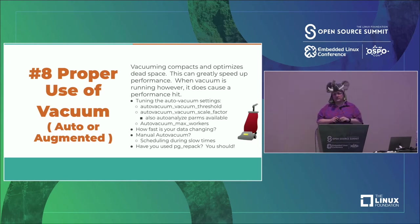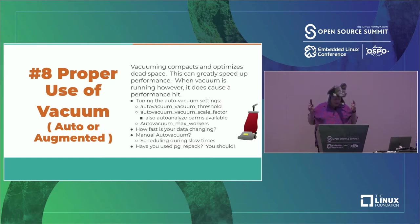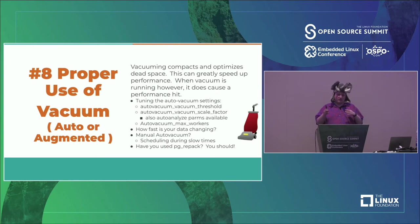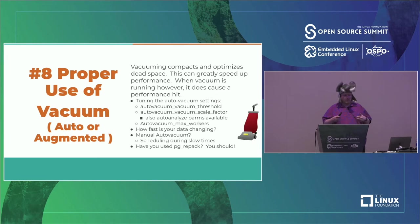Number 8: Proper use of vacuum. Has anyone been bitten by vacuum or auto-vacuum issues? Vacuum compacts and optimizes dead space in a nutshell and can dramatically speed up performance. Postgres has two primary tuning settings for auto-vacuum: threshold and scale factor. You can use those to determine how often it runs — either by percentage or by number of changes. Getting those right is very difficult, and some people push off vacuum too much and run into all kinds of other issues. You have to understand how to tune them and look at tools like PG Repack.